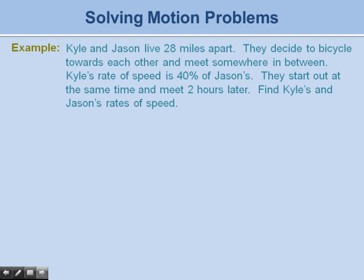Finally, we can use systems of equations to solve motion problems. The basic formula is distance equals rate times time, or D = RT. In this problem, Kyle and Jason live 28 miles apart. They bicycle toward each other starting at the same time and meet two hours later. Kyle's rate of speed is 40% of Jason's. Find Kyle's and Jason's rates of speed.